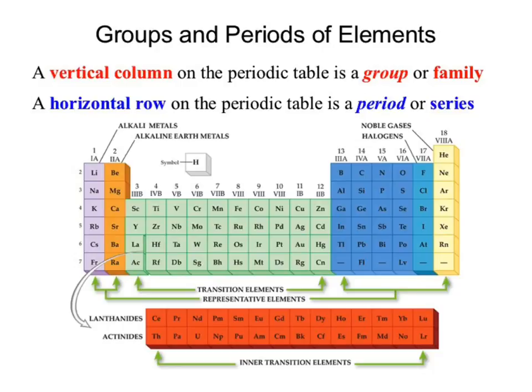Those are just nomenclature terms — you just have to know what they mean. Group and family go up and down; period or series goes left and right. The most common terms you'll hear are period and group. After that, certain columns pick up their own unique name. Why would they carry their own name? They share properties — and they were discovered so long ago that they'd been named already. The big ones you need to know: the alkali metals, the alkaline earth, your noble gases, and the halogens.